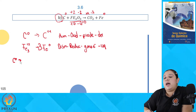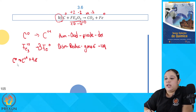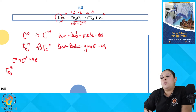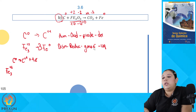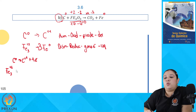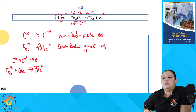El carbono pasó de 0 a +4, perdiendo 4 electrones; los electrones se escriben del lado de los productos. El hierro Fe₃, con cada átomo trabajando con +2, gana 2 electrones por átomo; al multiplicar 3 átomos por 2 electrones, se ganan 6 electrones en total, que se escriben del lado izquierdo. Así que tenemos 4 electrones en la semirreacción de oxidación y 6 electrones en la de reducción: no son iguales.